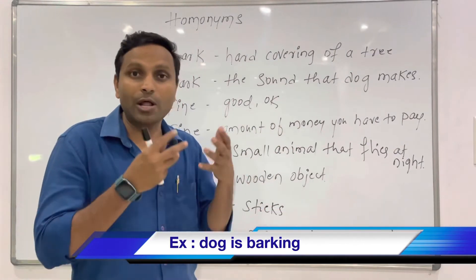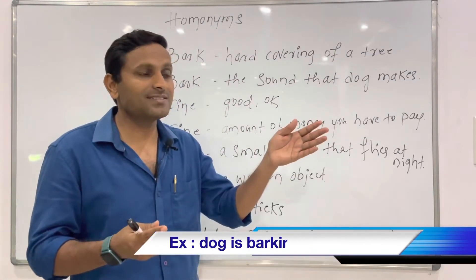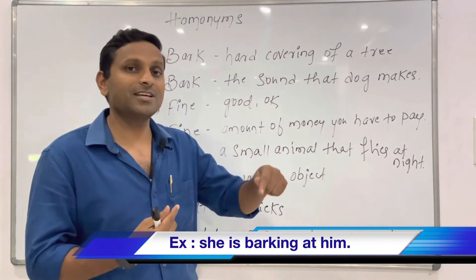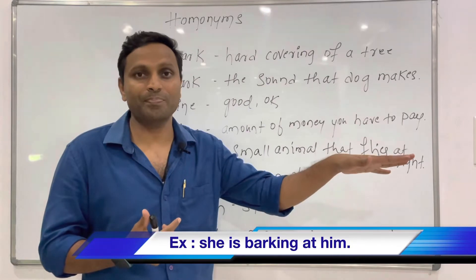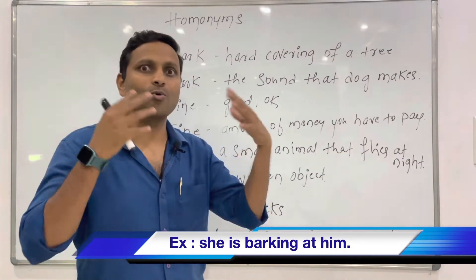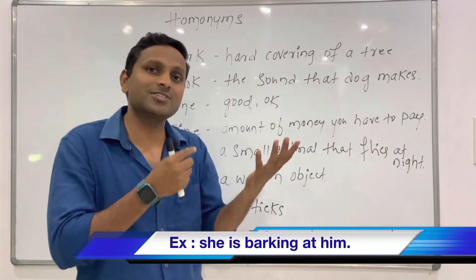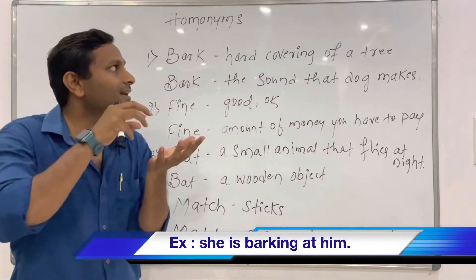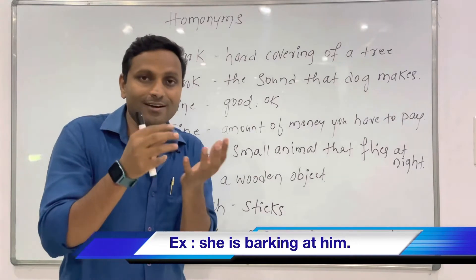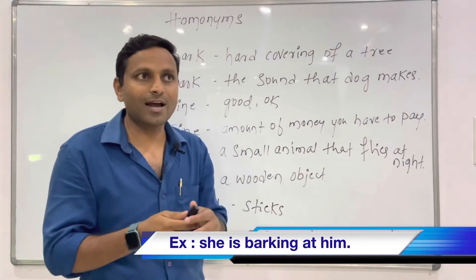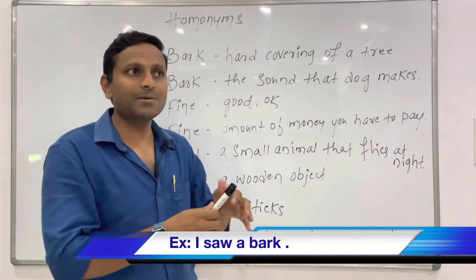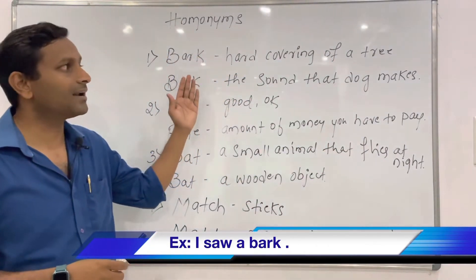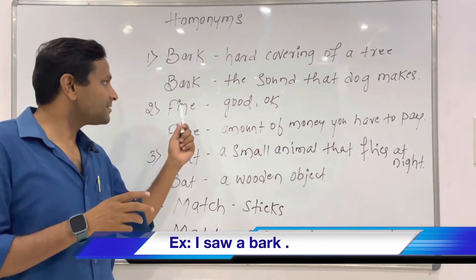Bark can also mean somebody is talking too loudly. For example: 'He is barking at me' or 'She is barking at him' — meaning somebody is talking in a very loud voice. At the same time, 'a bark' refers to the hard cover of a tree, used as a noun: 'I saw a bark.' That is how we use the word bark.